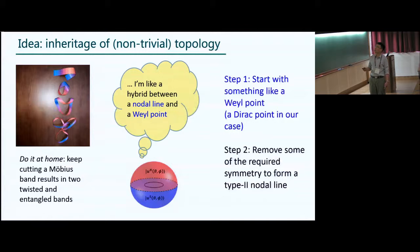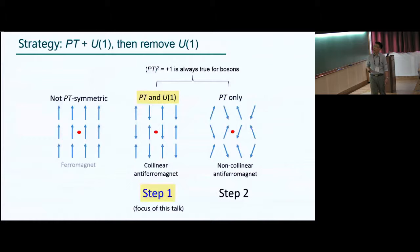So that's the strategy we used. We start with something like a Weyl point and a Dirac point, in our case, as I will show you in a minute. So we start with this in the magnon band structure, and then we remove some of its required symmetries to make it a nodal line. And then the nodal line we obtain will be the type 2 nodal line with the essence of a Weyl point.